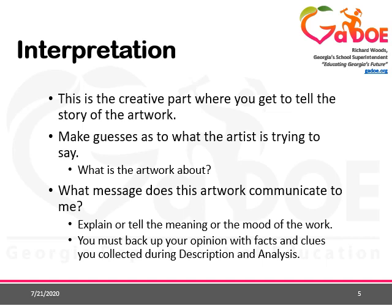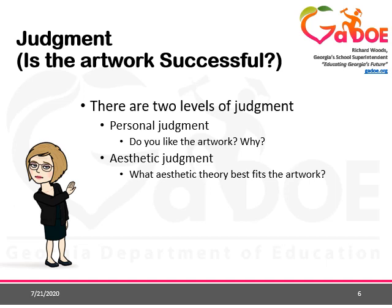Step three is interpretation — your interpretation as the viewer of the artwork and what you think it's about. In this section you'll tell the background story of the artwork and reveal what clues you used to make the interpretation. This is really the creative part. You can make guesses about what you think the artist is trying to say, what you think the artwork is about, what message it communicates to you. You can explain the meaning or mood of the artwork. You must back up your opinion with facts and clues collected during the first two steps: description and analysis.